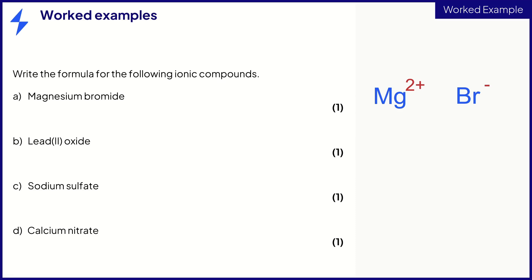These charges are different and opposite which means we can use the swap and drop method. So swap them over and drop them down. Remove the charges. There are no brackets needed here so the formula is MgBr2. This scores you one mark. Let's double check the formula is correct. We have one magnesium ion with a charge of 2 plus which is cancelled out by two bromide ions each with a charge of 1 minus. These add up to zero.